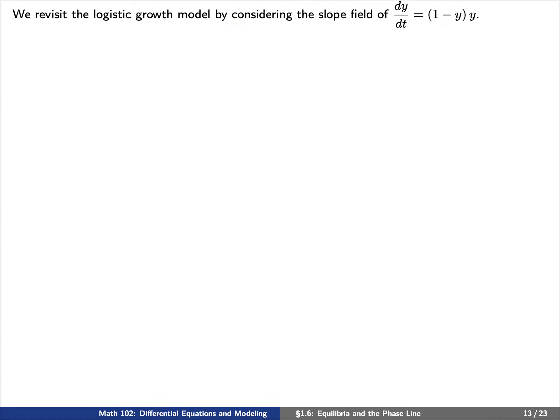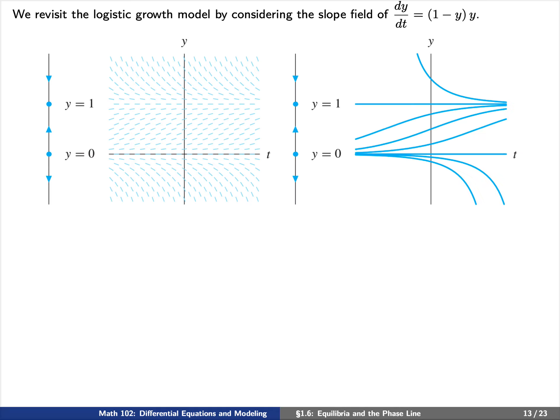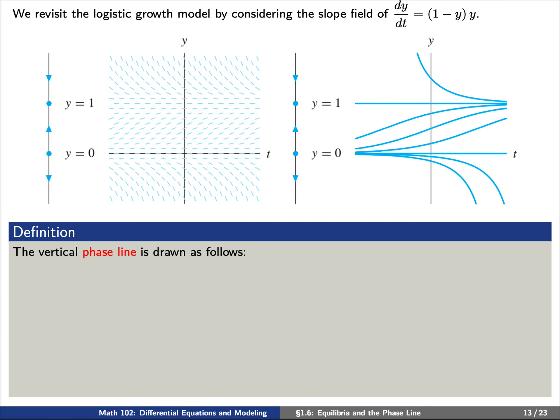To get some intuition, let's revisit the logistic growth model by considering the slope field of the specific differential equation dy/dt equals (1 − y) times y. On the left we've plotted the slope field, with time t on the horizontal axis and population size y on the vertical axis. On the right we have specific solution plots y(t) shown as thick blue lines. We can draw these slope fields in a slightly different way using what are called the phase lines — the vertical lines shown directly to the left of both graphs.